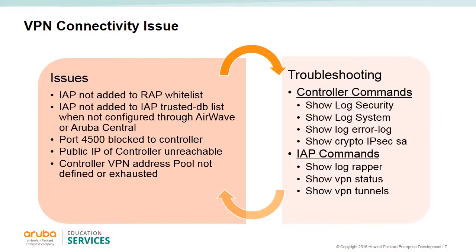Common mistakes that cause VPN connectivity issues include: the IAP is not in the whitelist or not trusted; a gateway firewall is blocking UDP 4500, blocking the IAP's VPN; ISP or DMZ issues where the IAP cannot reach the controller's public IP address; misconfiguration of the IP address in the VC IAP; or the VPN pool is exhausted. There are commands on both the controller and the IAPs to troubleshoot these problems.